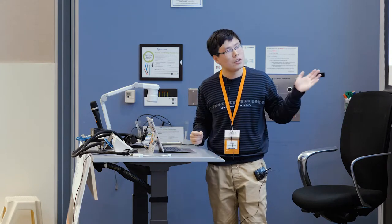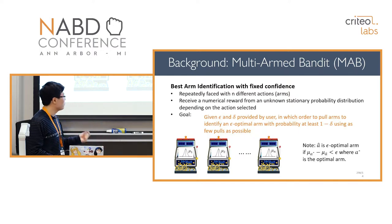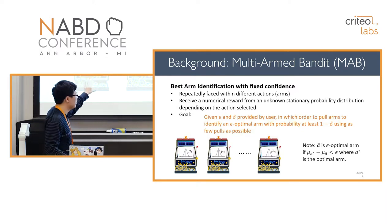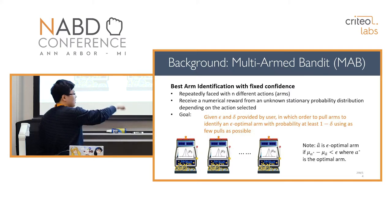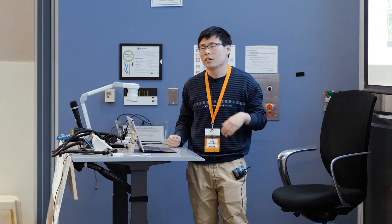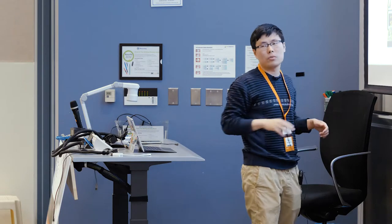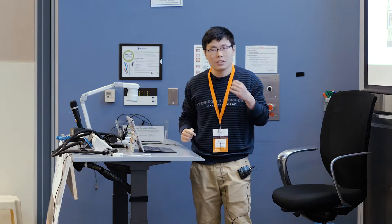Slot machines are a typical example to understand multi-arm bandit. We have n slot machines, each with an arm to pull. Every time the user pulls an arm, they receive a numerical reward sampled from that machine's reward distribution, which is unknown to the user. The user must interact with these machines to figure out which is likely to output the most reward. The goal is an optimal strategy that minimizes the number of samples needed to identify the best machine — the one with the highest true mean reward.